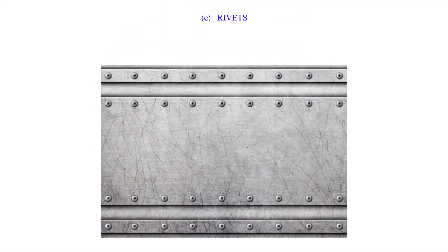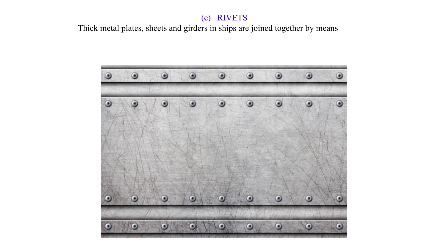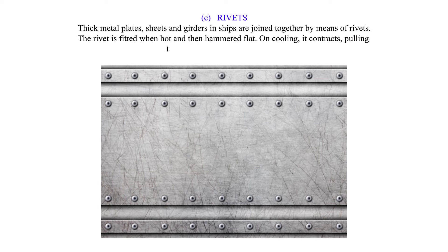E. Rivets: Thick metal plates, sheets and girders in ships are joined together by means of rivets. The rivet is fitted when hot and then hammered flat. On cooling, it contracts, pulling the two plates firmly together, as shown.